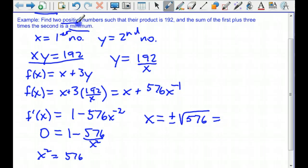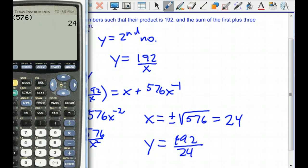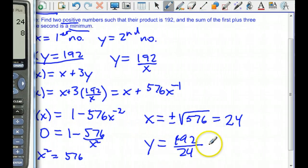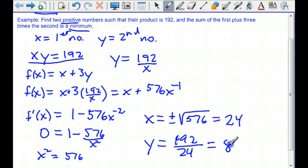In the beginning, it said positive numbers, so this is going to be positive 24. And that means that y is 192 divided by 24, which is 8. So those are our two numbers, 24 and 8, and they will give us a minimum of this sum. Those two numbers will minimize that sum.